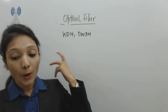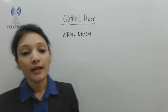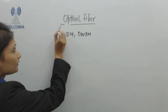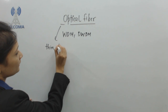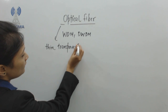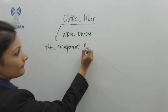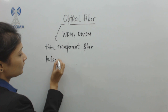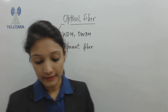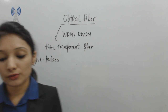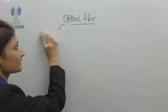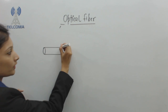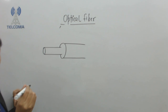Optical fiber is basically a thin transparent fiber for transmitting information from point to point by using pulses of light. It is a material used to carry signals, and it is composed of different units.